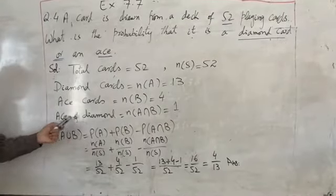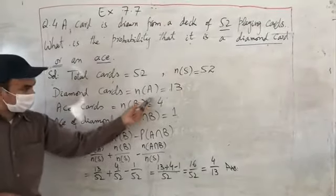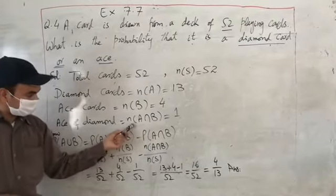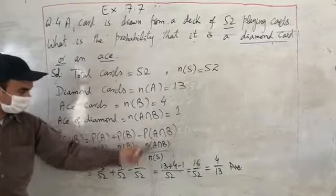So now ace of diamond, that one element common among cards, it is denoted as N of A intersection B is equal to 1.